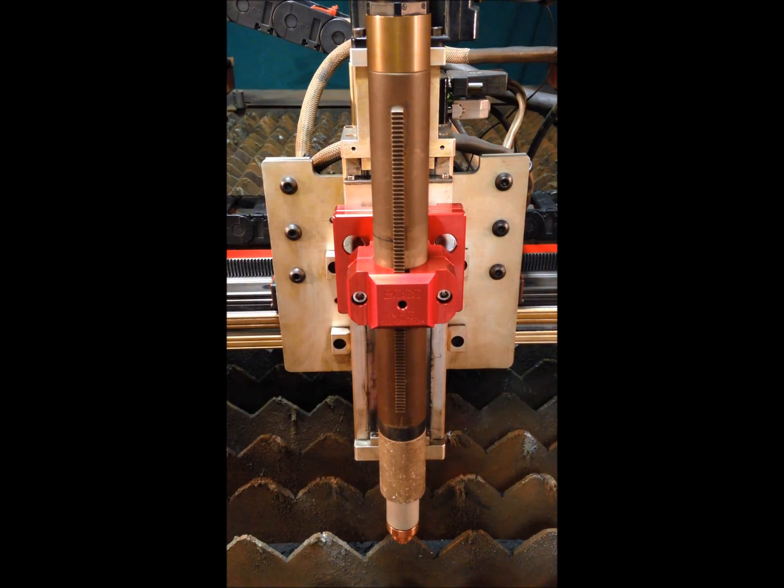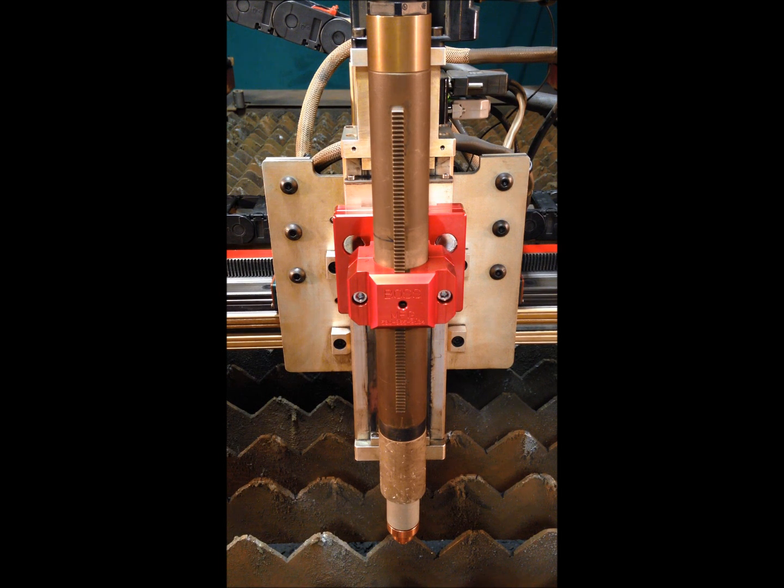Our plasma torch holders use eight rare earth magnets—four of which are placed into a CNC machined counterbore on the torch holder, and four into a CNC machined counterbore on the adapter side. Mounting the magnets this way prevents the magnets from ever pulling out of the bores on their attracting sides.